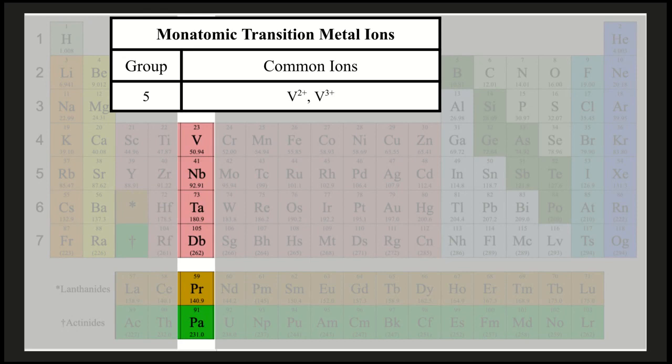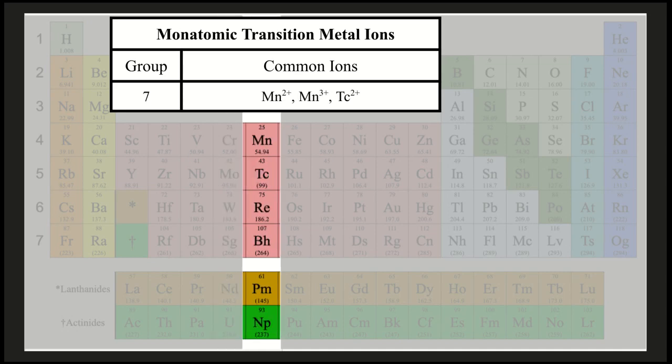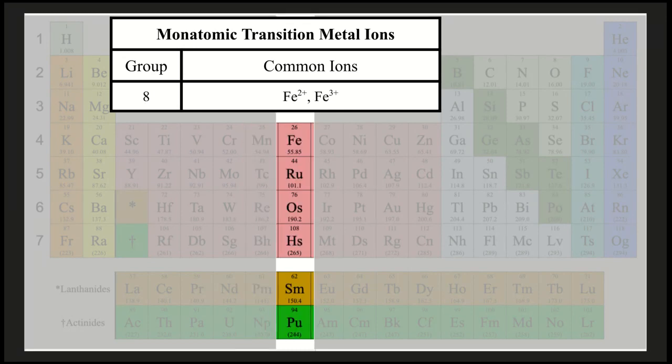Vanadium commonly comes with a 2-plus or a 3-plus charge. Chromium commonly comes with a 2-plus or 3-plus charge as well. Manganese commonly comes with a 2-plus or a 3-plus charge. And technetium commonly comes with a 2-plus charge. Iron commonly either has a 2-plus or a 3-plus charge.